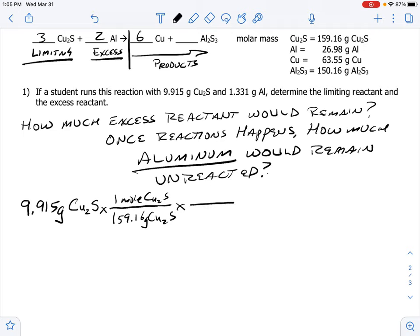I then use my mole ratio so moles of my copper(I) sulfide on the bottom, moles of aluminum on the top. Looking up at my balanced chemical reaction, I have three moles of the copper(I) sulfide to two moles of aluminum.